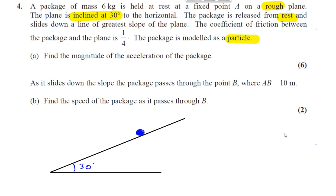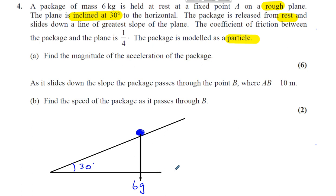Now let's look at the forces acting on this particle. First of all, it has weight — 6 kilograms. So you've got 6 kilograms acting down, that's going to be 6G Newtons — 6 times G, that will be the weight. That's the force acting down. G we take as 9.8 in M1, but I'll just write 6G for now.